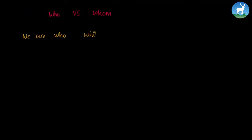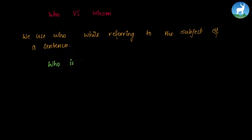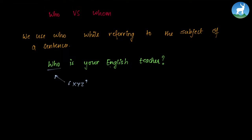We'll also look at when to use who and when to use whom. We use who while referring to the subject of a sentence. For example: 'Who is your English teacher?' — we are referring to the name of the English teacher, which is the subject of the sentence. We use who because we are talking about the subject.